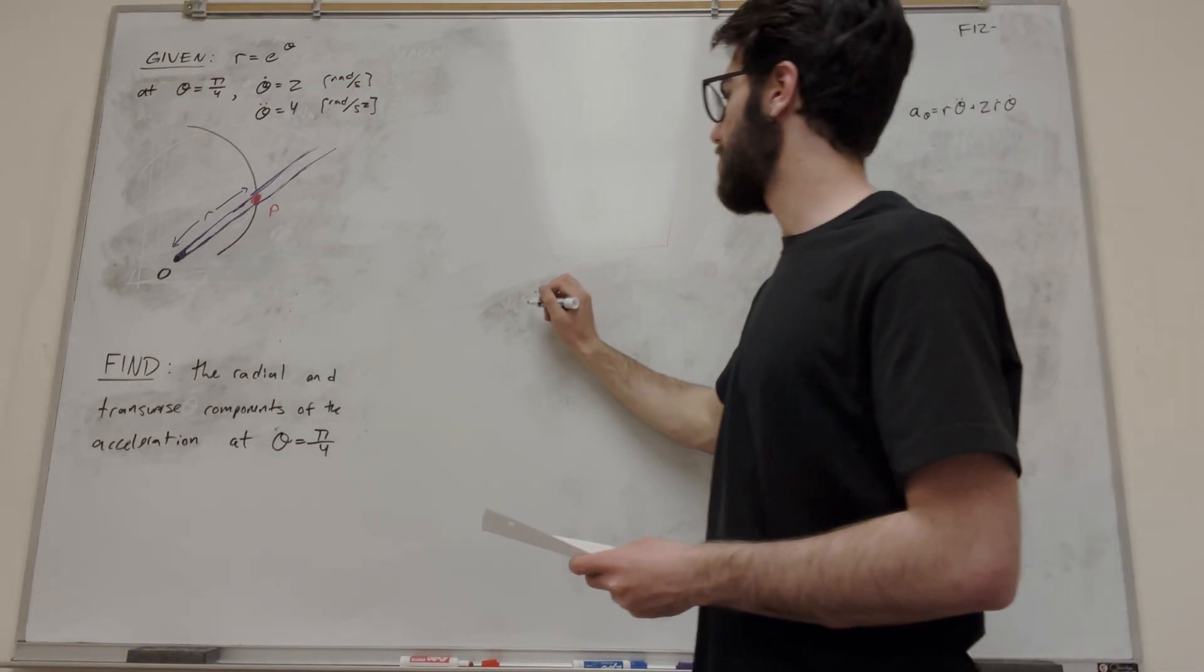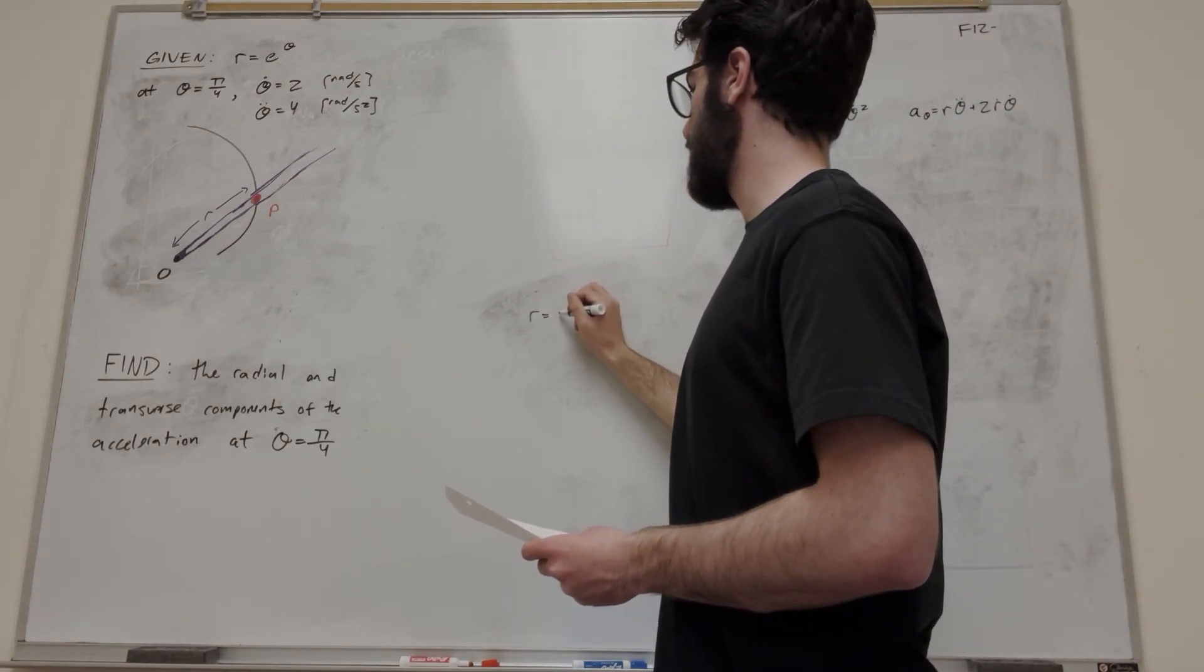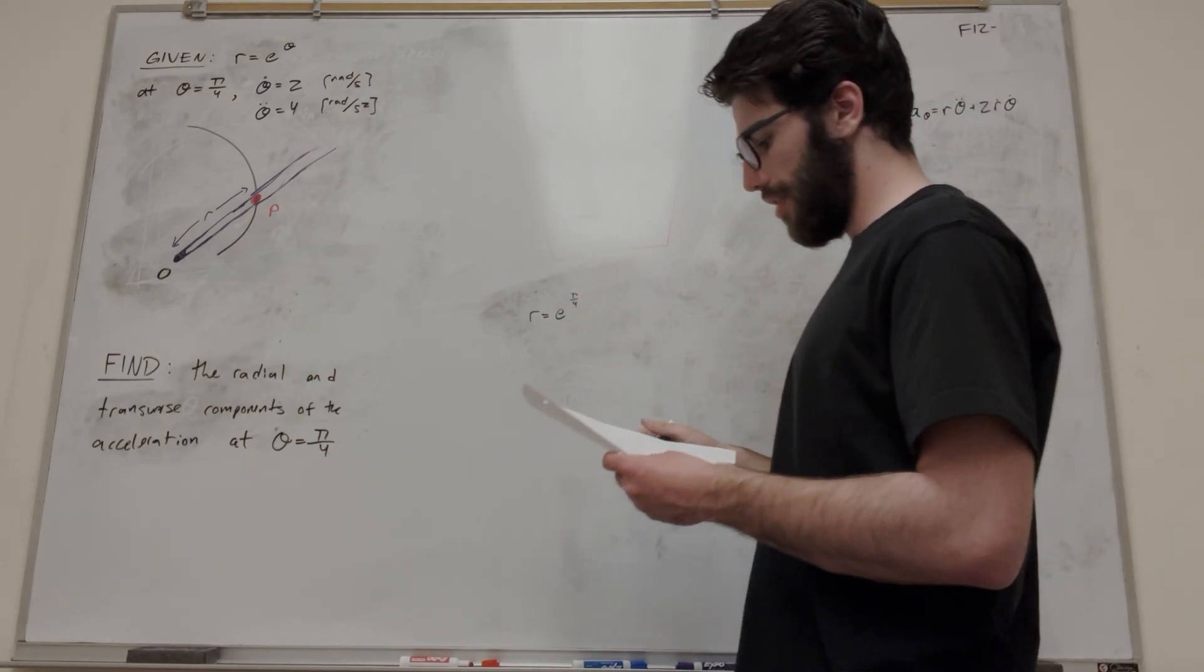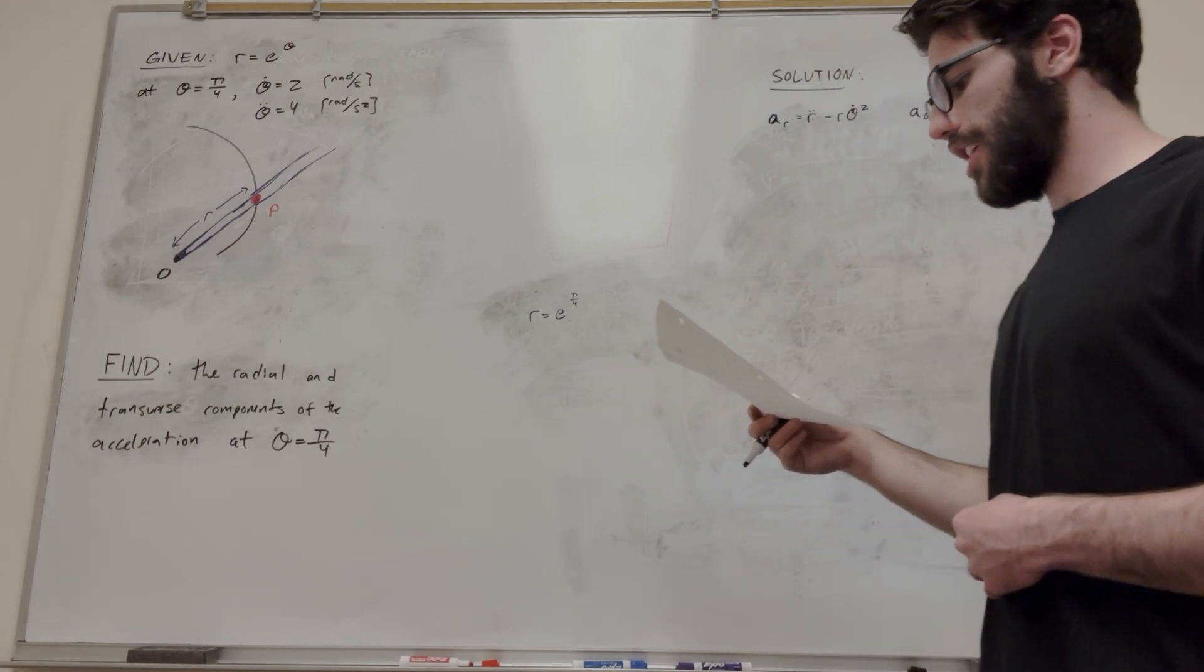So let's go ahead and do that. Let's start with r. r is equal to e to the theta, but we're looking at e to the pi over 4. So let's just keep it like that.